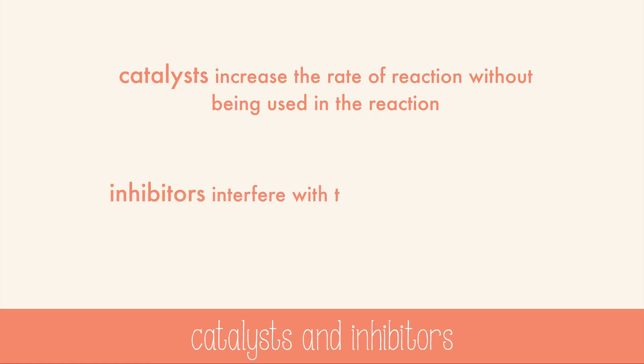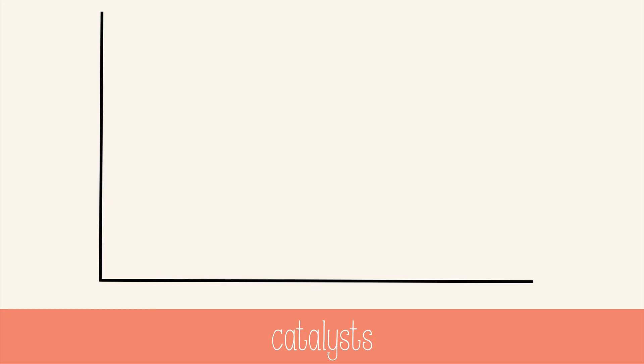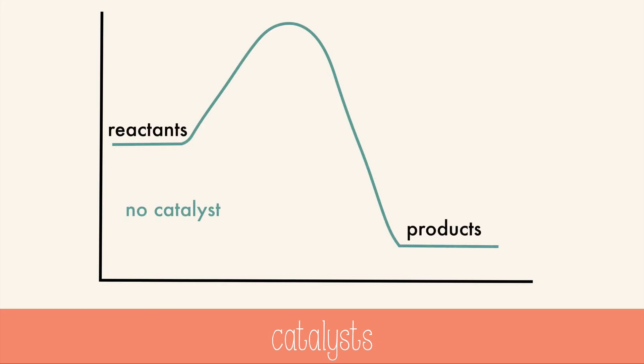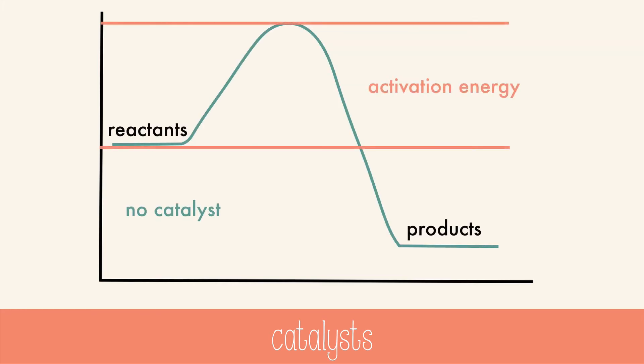Inhibitors interfere with the action of the catalyst by reacting with or destroying the catalyst, preventing it from speeding up the reaction. A reaction that occurs without a catalyst has to first gather enough activation energy for the reaction to occur and form products.